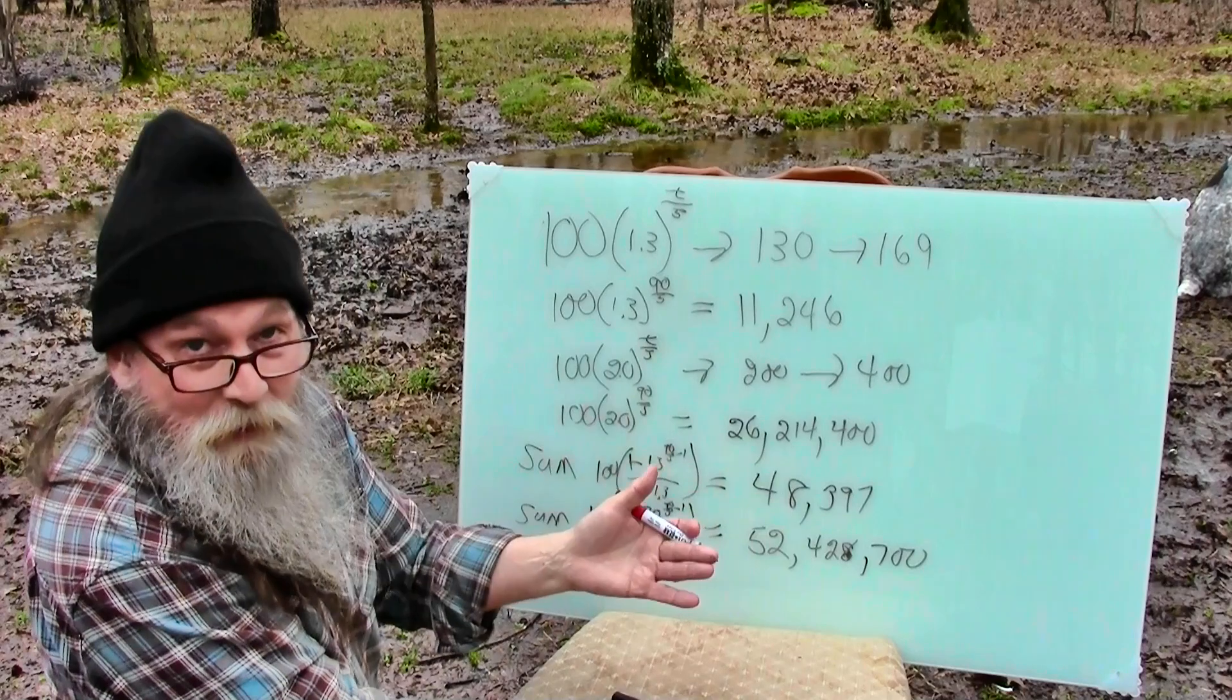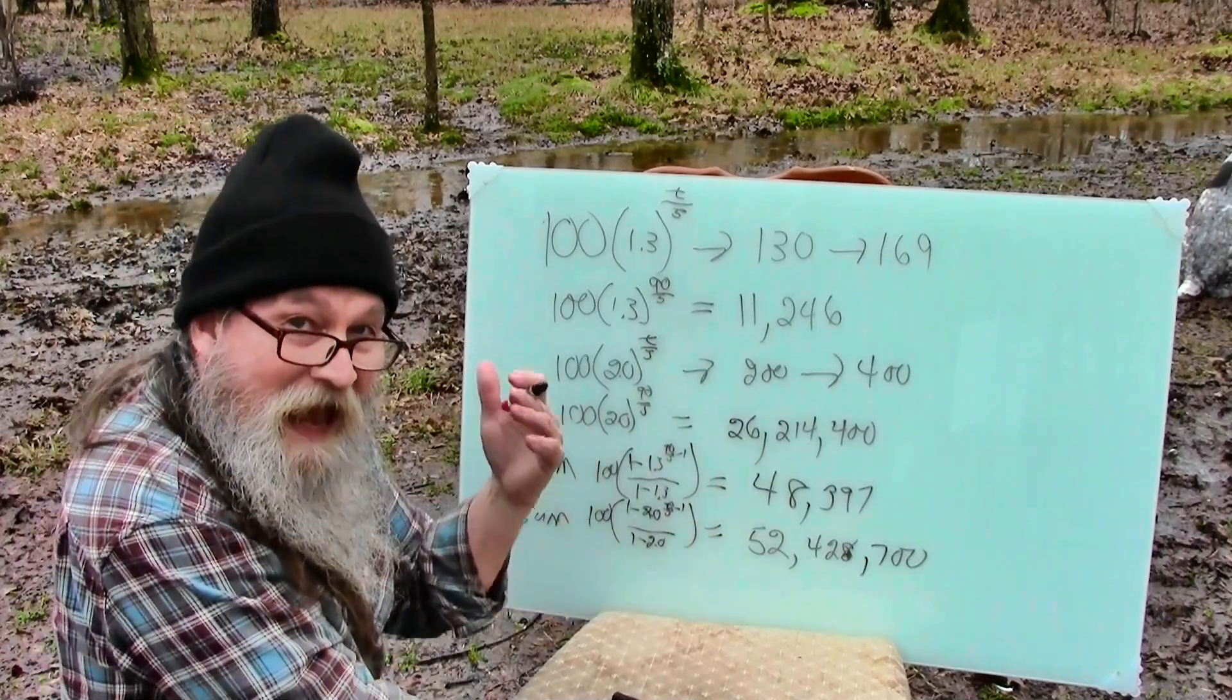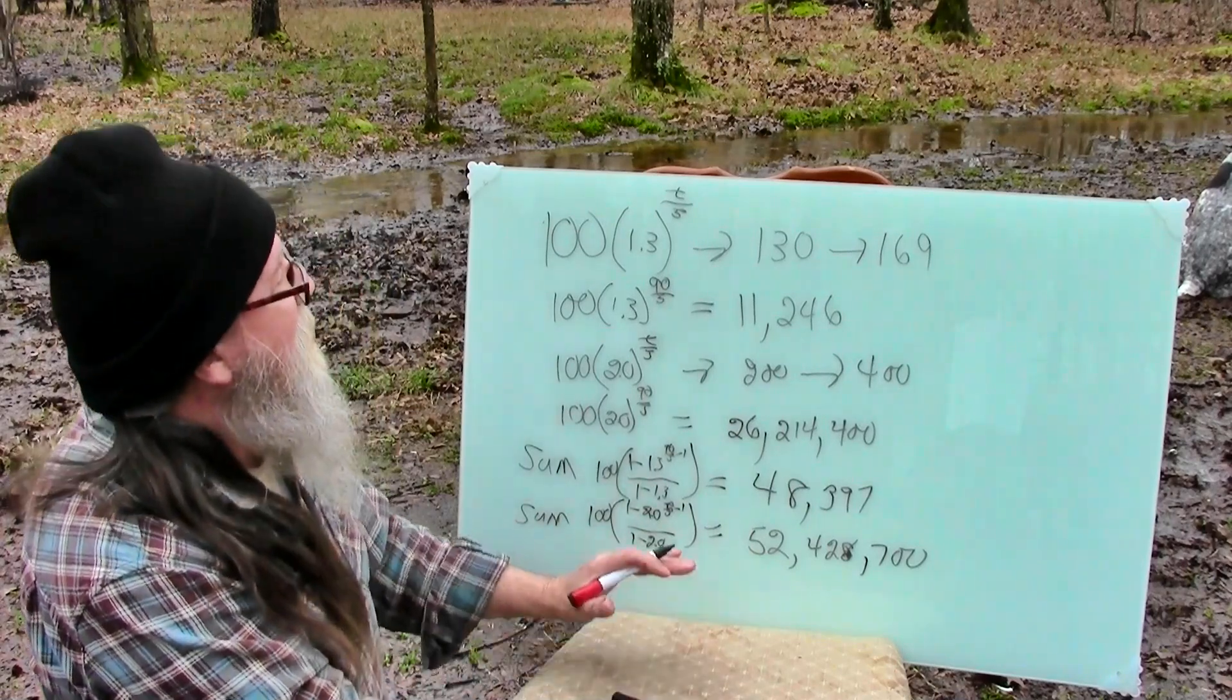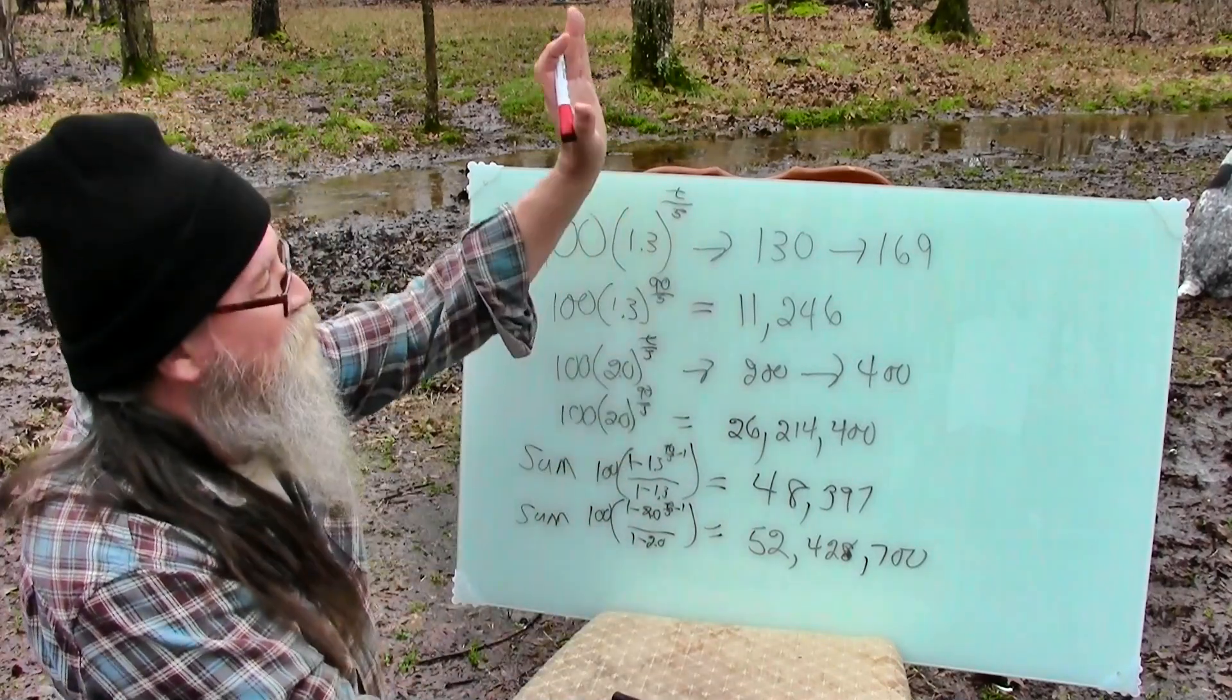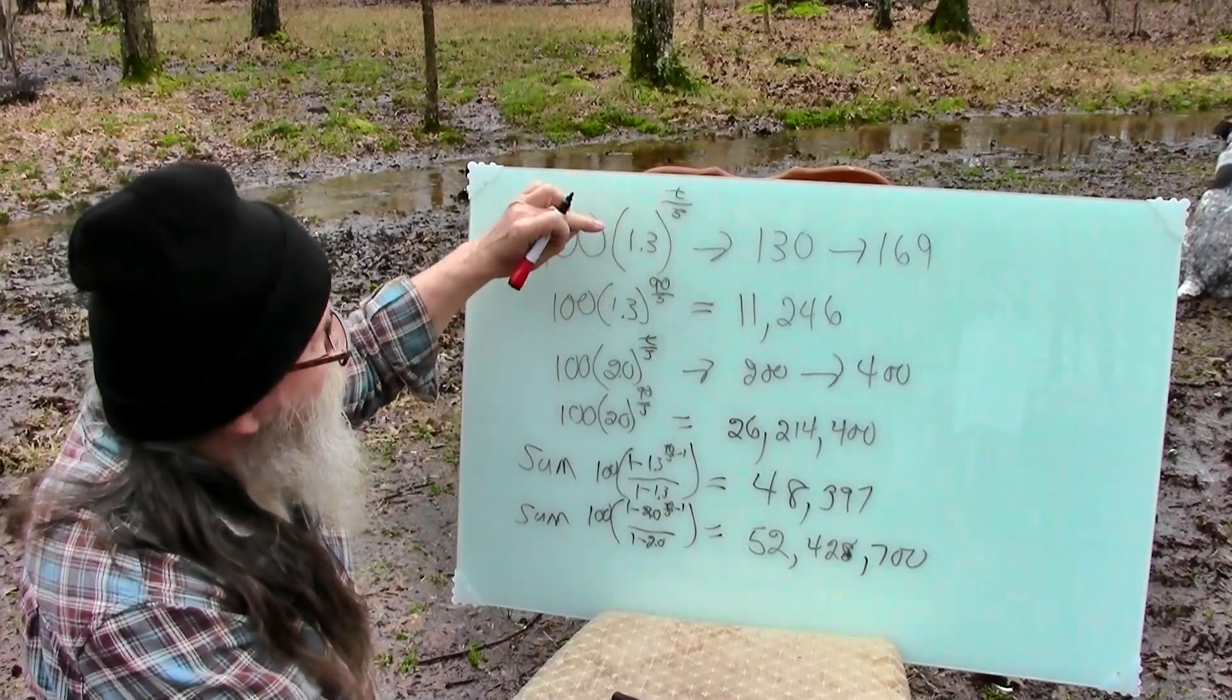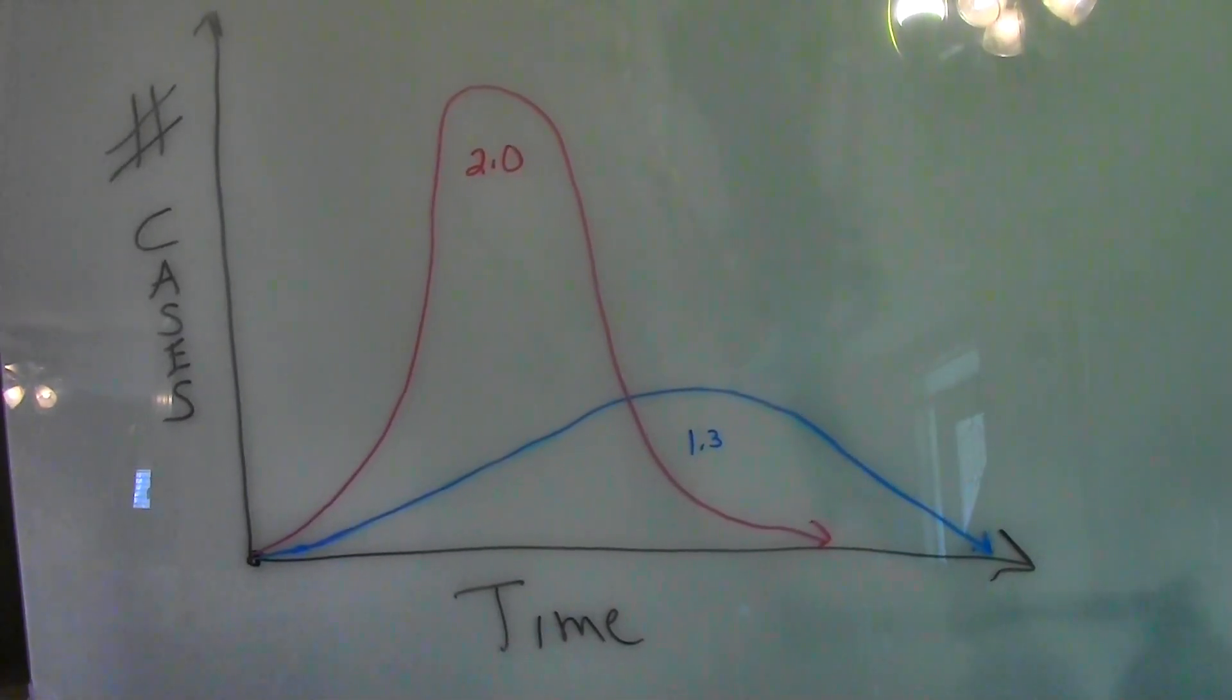Because the less people that get sick, the less people we have to worry about getting healthy. So, I really hope that this has helped explain and describe it quickly. And so, exponential growth, and then by making this number littler, we can lower that curve down and flatten it out.